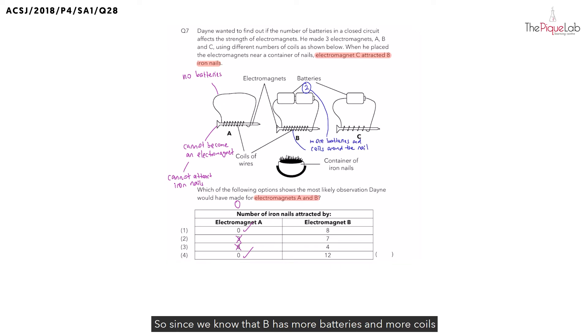Since we know that B has more batteries and more coils around the nail, would B become an electromagnet with greater magnetic strength?